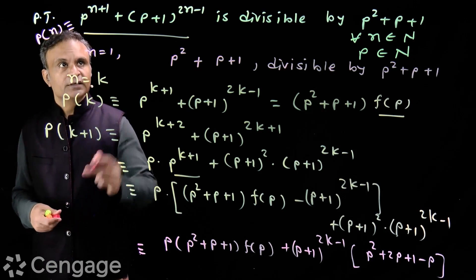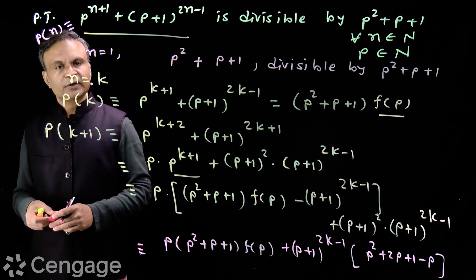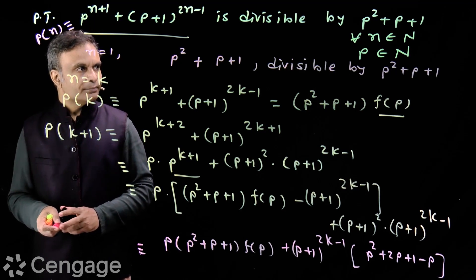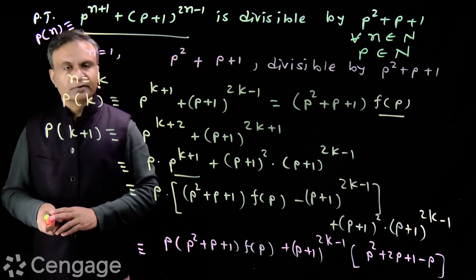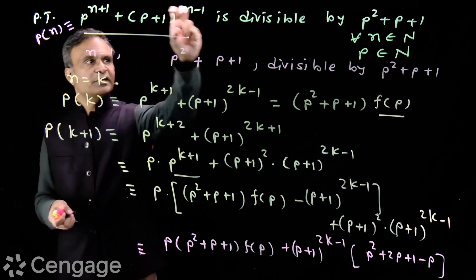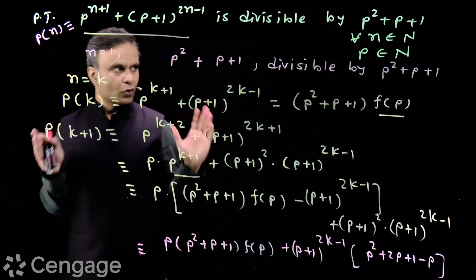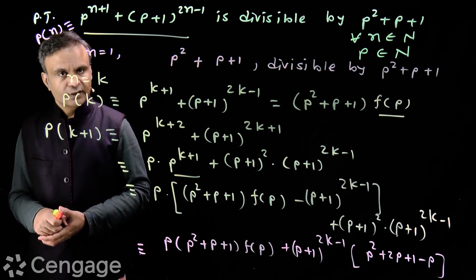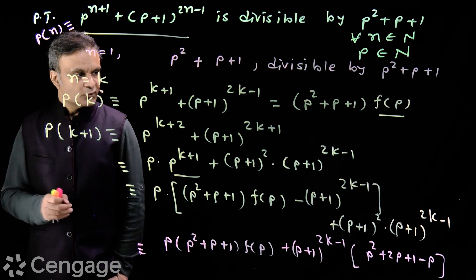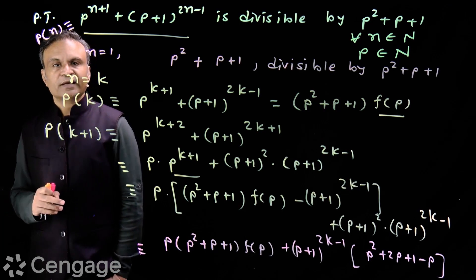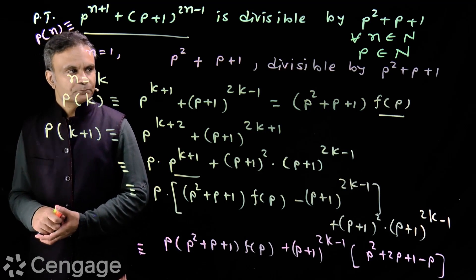So the statement is true for n=k+1 also. By PMI, we have proved that this expression is divisible by p²+p+1 for all n belonging to the set of natural numbers. So I hope you understood how to handle divisibility problems of this type.